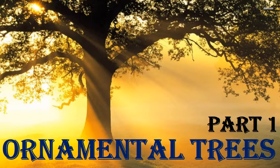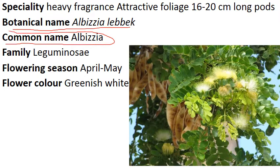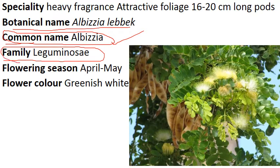Here we are taking 15 important trees. Let's start. First, comes to Albizia lebbeck. The botanical name is Albizia lebbeck. Common name is Albizia — in some places of India it is called Siris. You might have seen this tree; it is found everywhere. Family is Leguminosae. This family is also known as Papilionaceae family or Fabaceae family. Commonly, Leguminosae family is also called the Pea family.